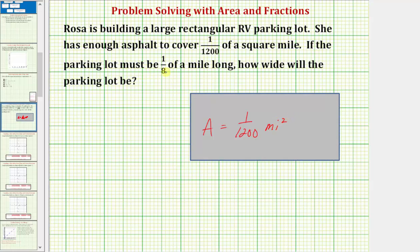If the parking lot must be 1/8 of a mile long, how wide will the parking lot be? So if this is the length of the parking lot, we know it must be 1/8 of a mile. And if this is the width, our goal is to find this length.